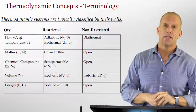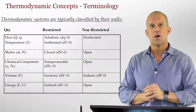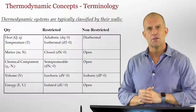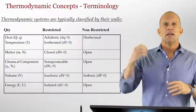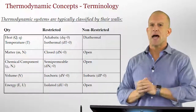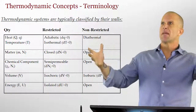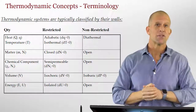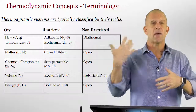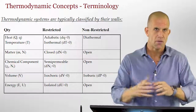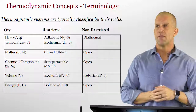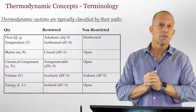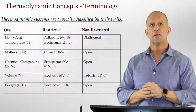If we stop the number of moles — which we usually use a capital N for — or matter from going back and forth between system and surroundings, we call it closed; otherwise it's open. As chemists, we often talk about individual components rather than total matter. For example, in air, maybe we allow just oxygen to permeate in and out — that's semi-permeable to certain components, using a subscript i to indicate the ith component. If we restrict hard, rigid walls so it's a fixed volume, that's isochoric.